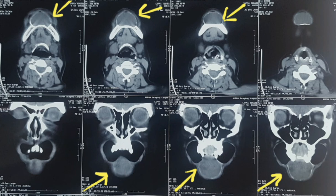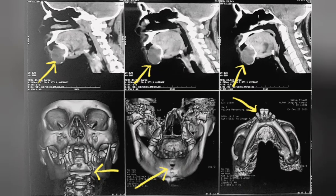The upper images show the sagittal section — we can see a unilocular radiolucency filled with fluid-like consistency in the radiograph. The lower image shows the coronal section of the same, again showing unilocular radiolucency in a large lesion at the center of the mandible. In the coronal section we can appreciate complete loss of the labial cortex as well as the inferior border of the mandible.